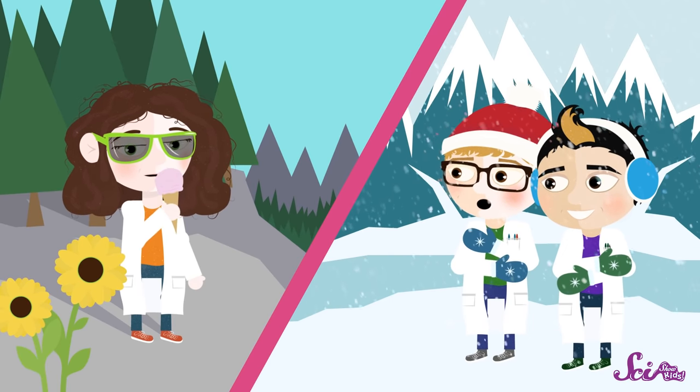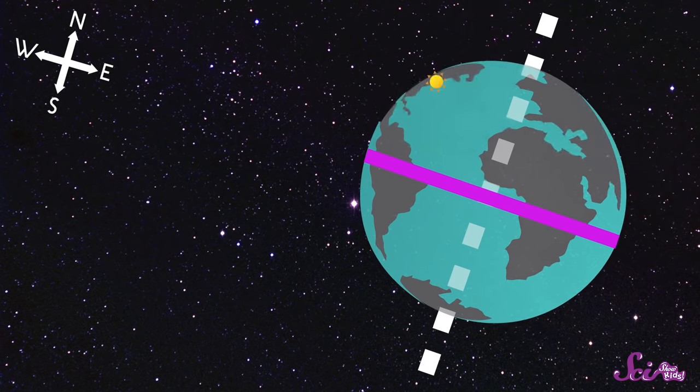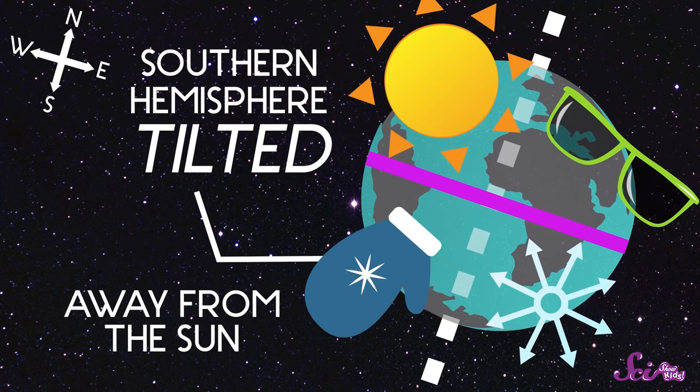because those different parts of the planet are getting different amounts of sunlight. When the northern hemisphere is tilted toward the Sun in the summertime, the southern hemisphere is tilted away, so it's wintertime there.